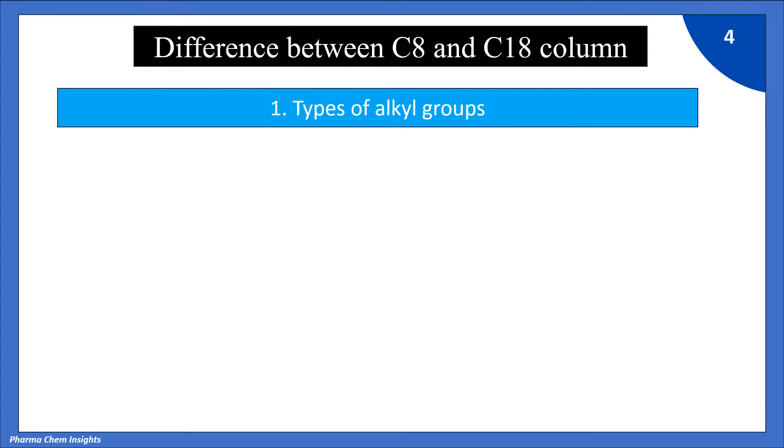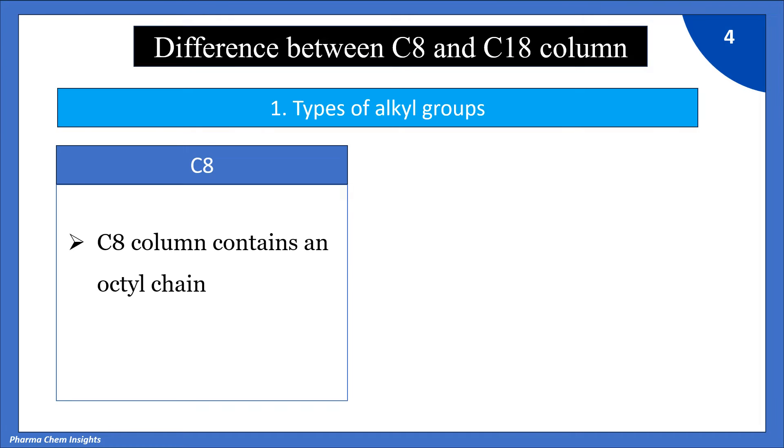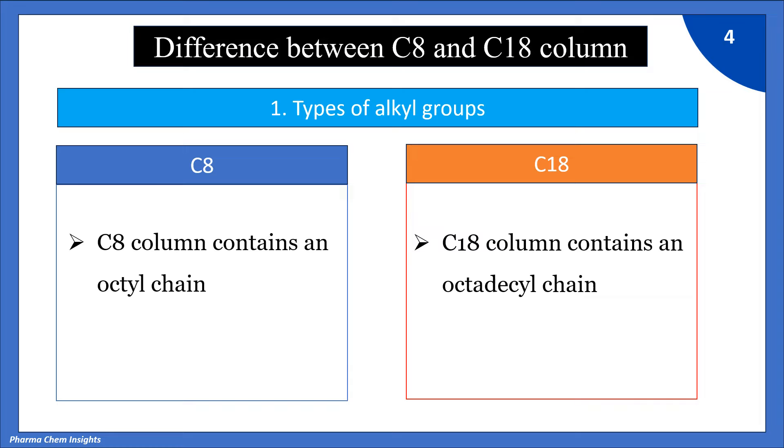Difference between C8 and C18 column on the following basis. 1. Type of alkyl groups: C8 column contains an octyl chain. C18 column contains an octadecyl chain.